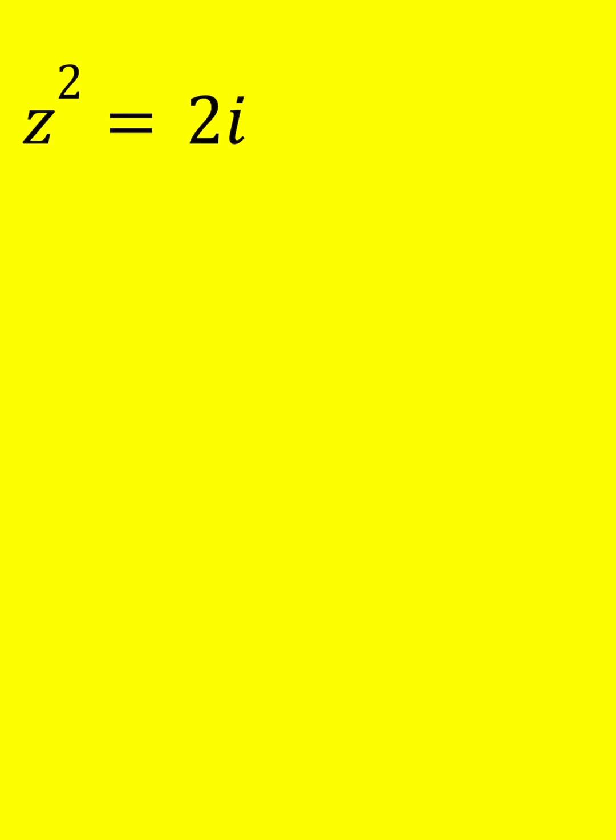So we're going to write z as a plus bi and we're going to square it, and when we square it it's going to become 2i. From here we can solve for a and b, obviously, but there's a better way to do it.